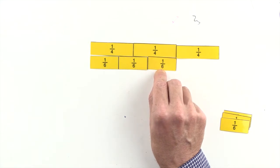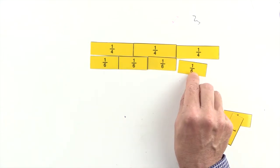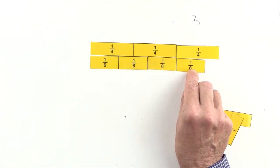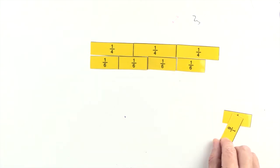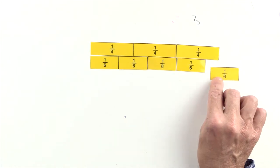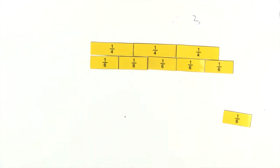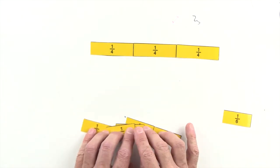Five sixths are greater than three quarters. So we can't use sixths to make an equivalent fraction to three quarters.